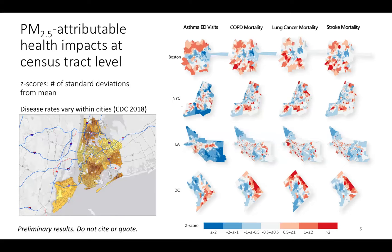We show results for four U.S. cities — Boston, New York City, Los Angeles, and Washington D.C. — and four health outcomes: asthma emergency department visits, COPD, lung cancer, and stroke. These Z-scores show standard deviations from the mean for cases attributable to PM2.5. There's quite a bit of spatial heterogeneity. In Washington D.C., for example, we see very high rates of PM2.5-attributable asthma emergency department visits in southeast D.C., consistent with known spatial heterogeneity of asthma there. The picture changes depending on which health outcome is examined.